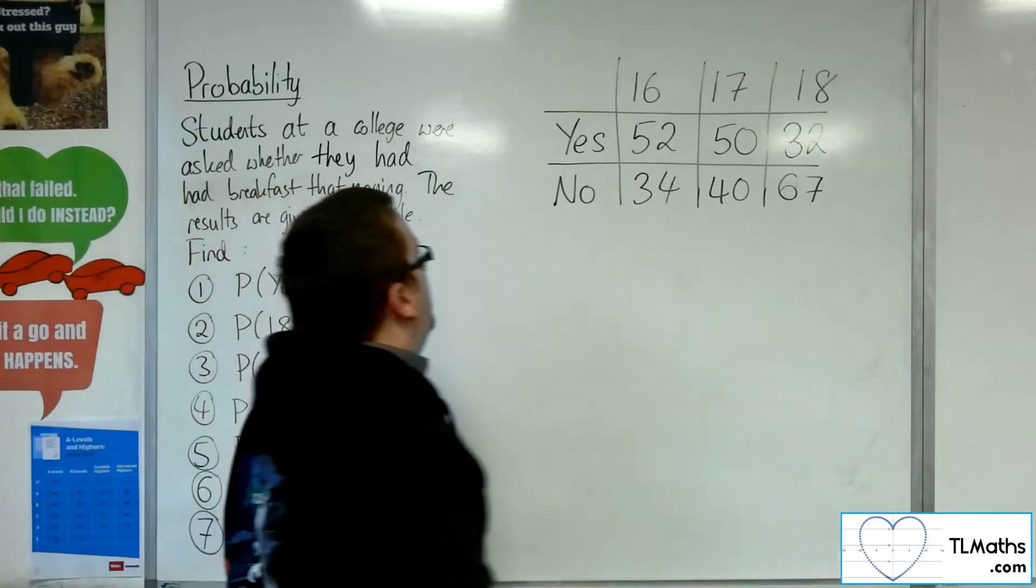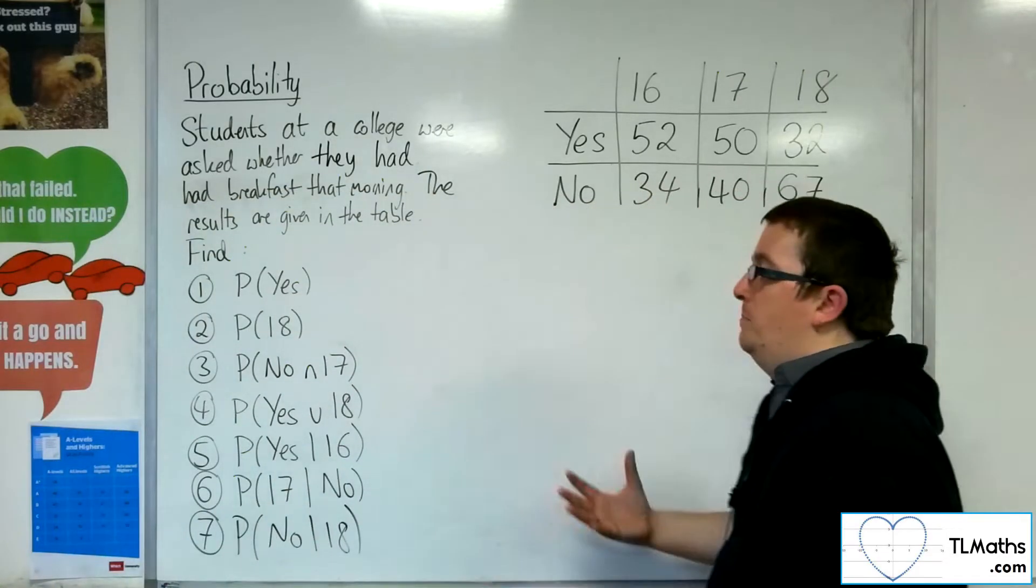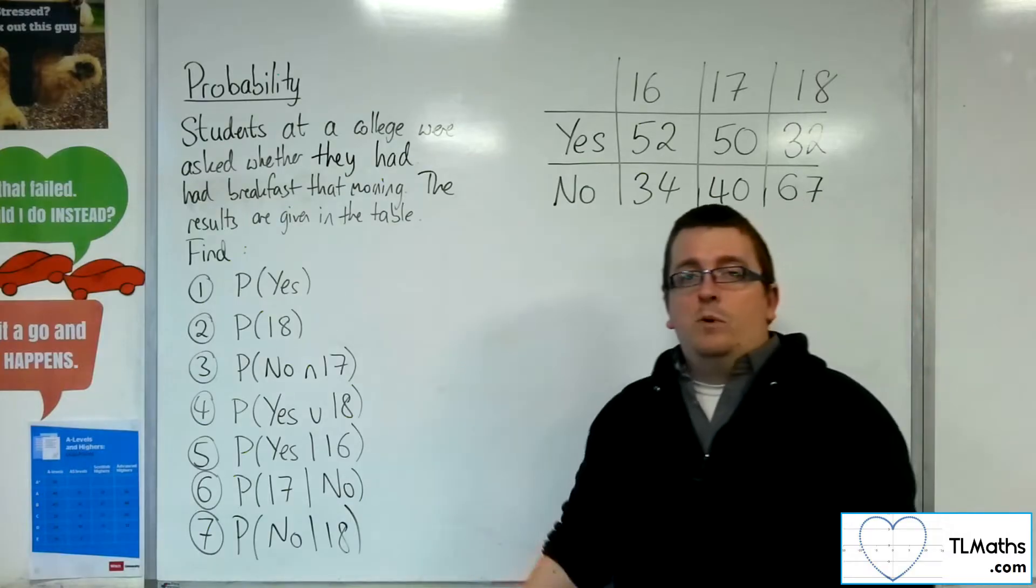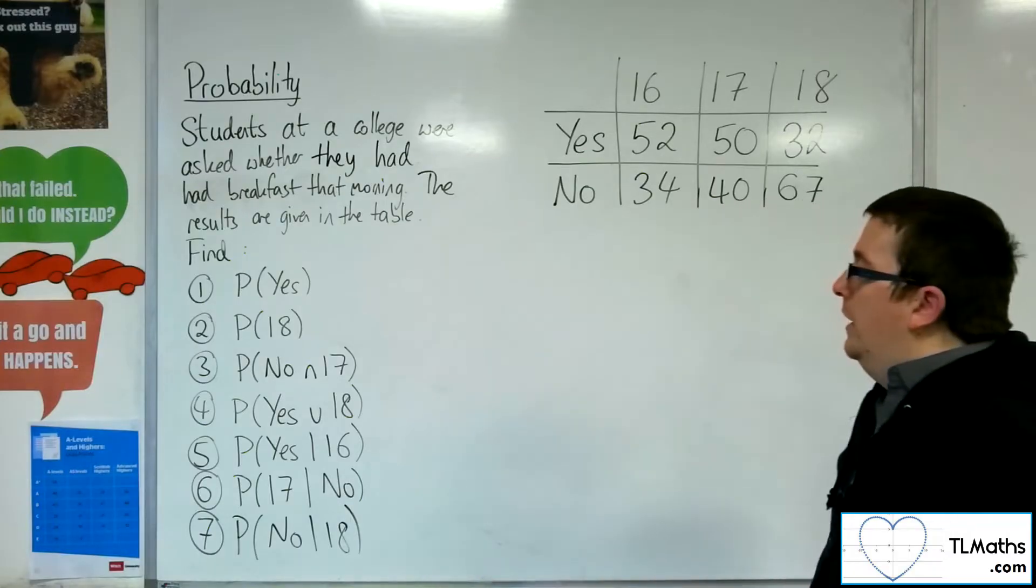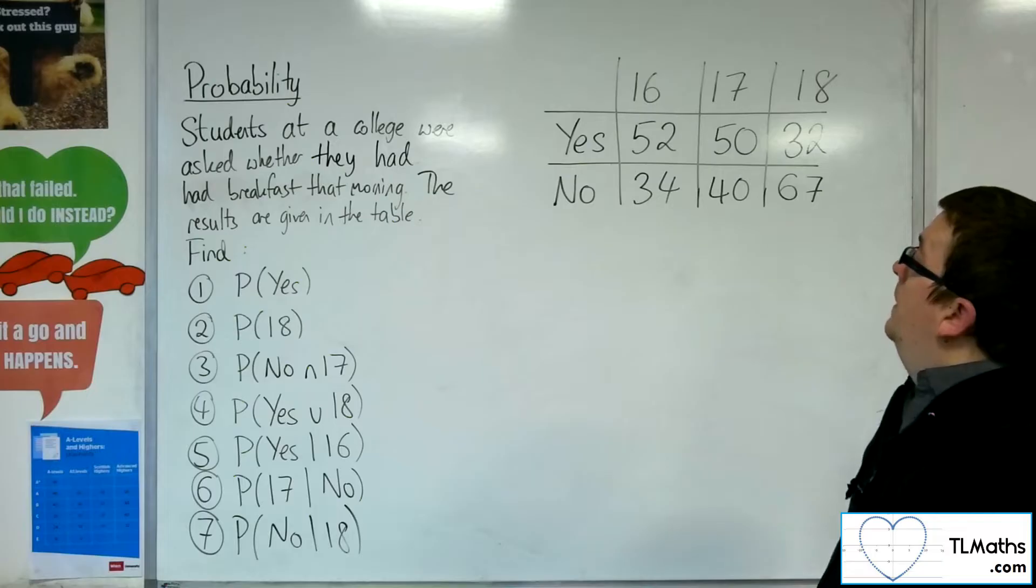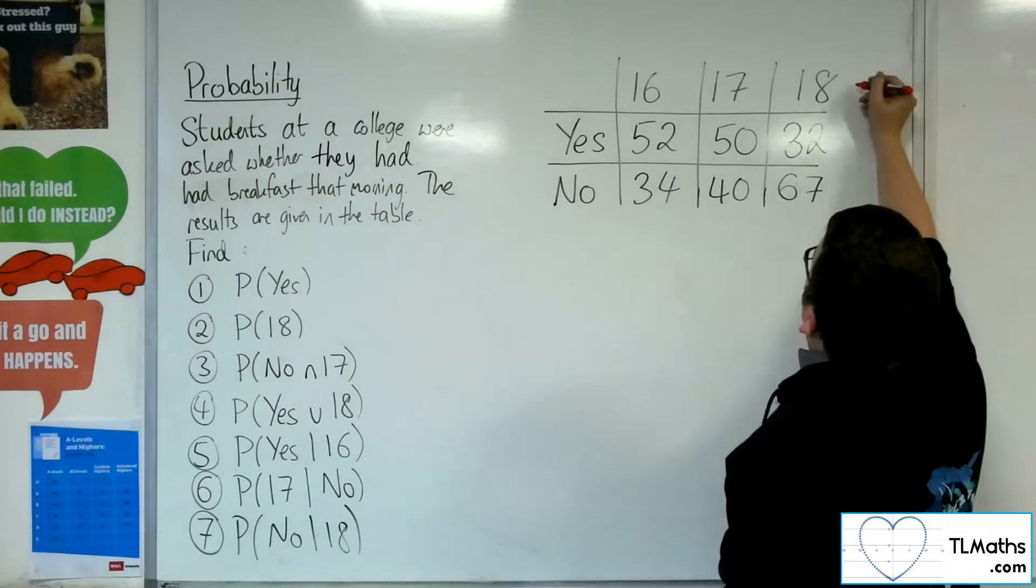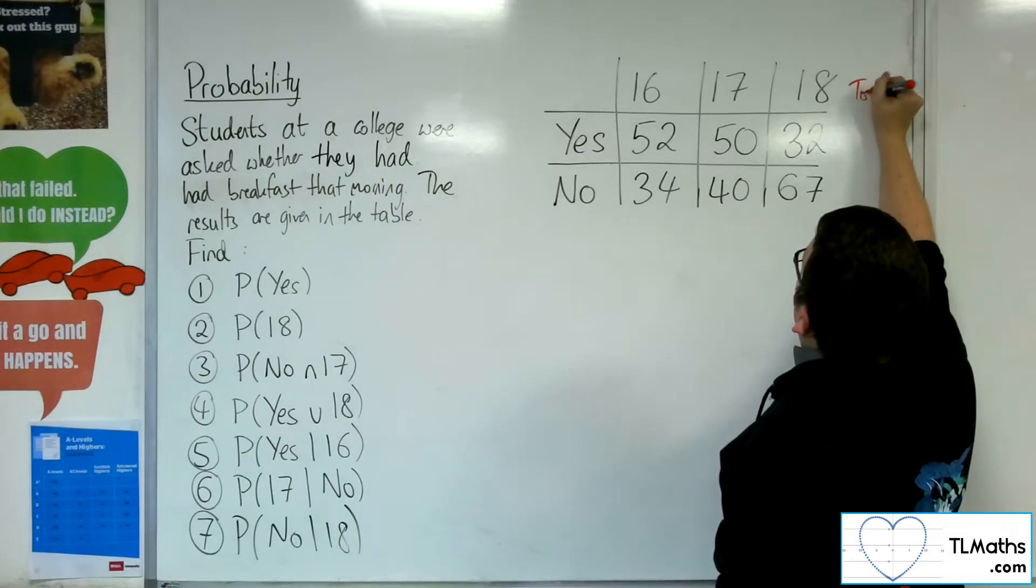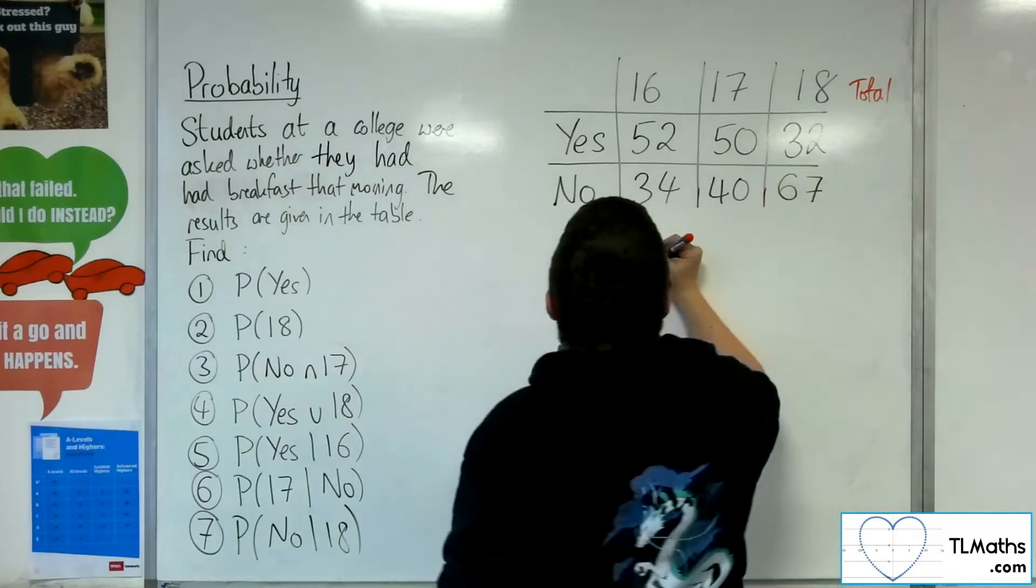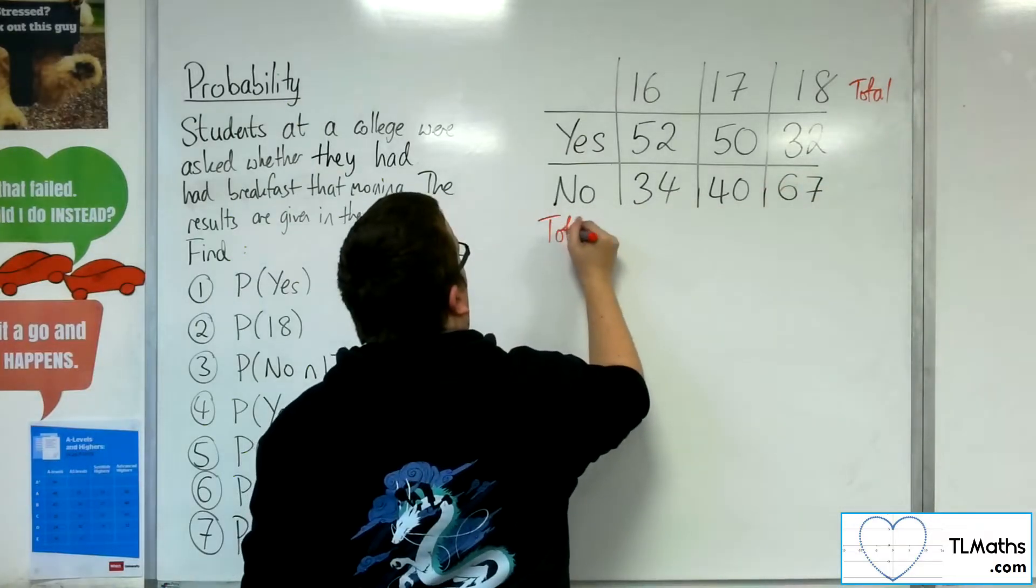So what we're going to do is work through finding some probabilities, the basic ones to start off with, and then we're going to get into some conditional probabilities for 5, 6, and 7. Okay, so first of all, probability of getting yes, of a student saying yes to this. Well, we haven't been given the totals, so we need to work those out. So we want the total for the rows, we want the totals for the columns.